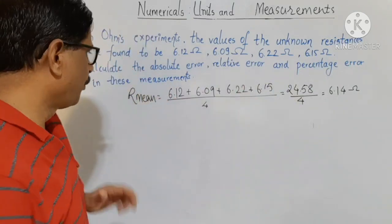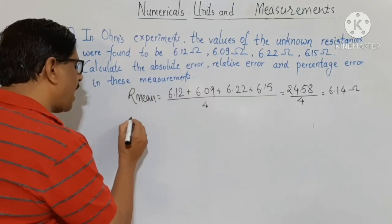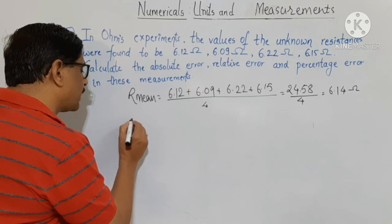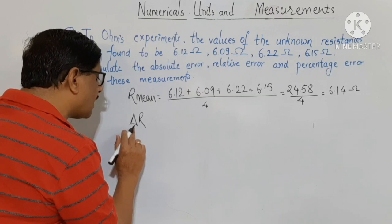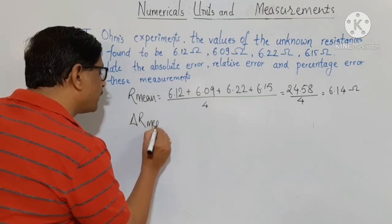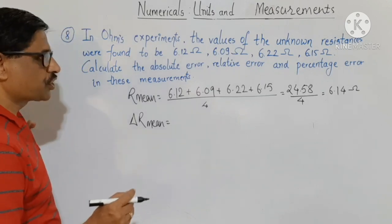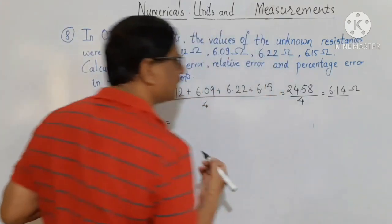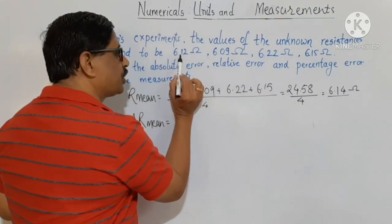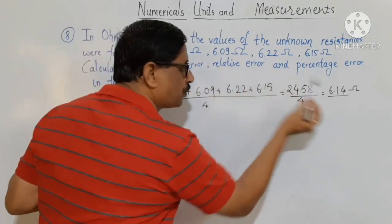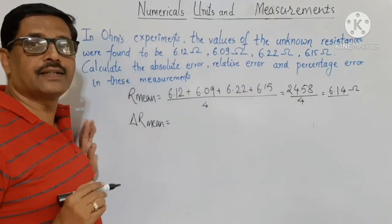Next, we find the absolute error in every measurement. The absolute error delta R for each observation is the difference between the mean value 6.14 and each measured value. This difference gives the absolute error in each measurement.